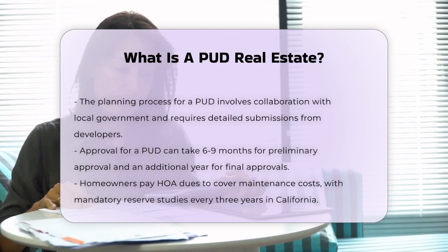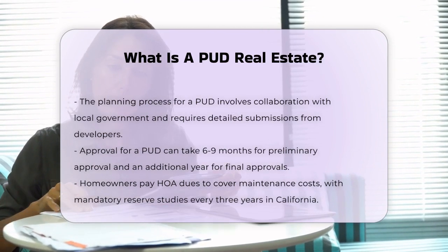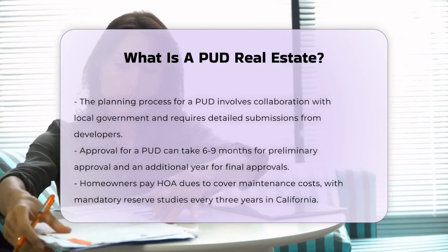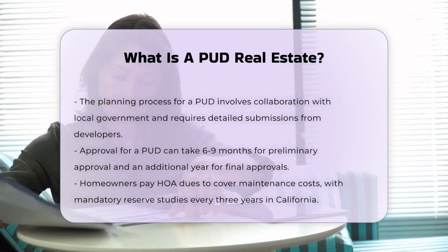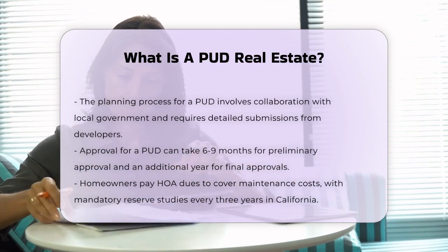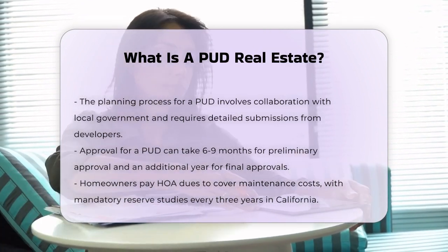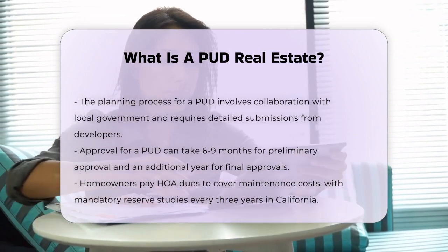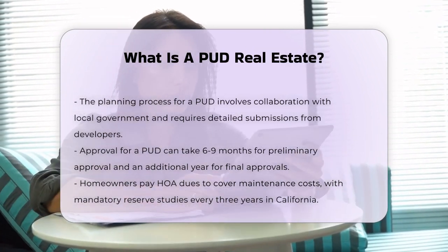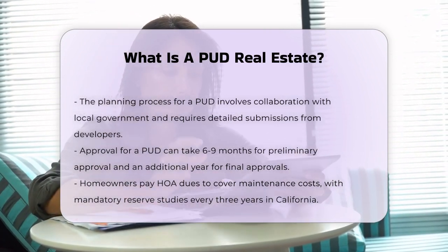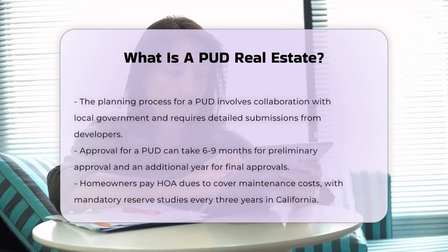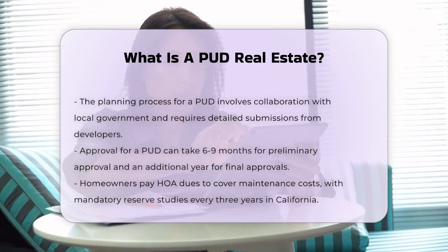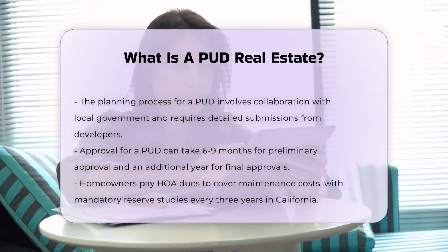Financial and maintenance aspects. Homeowners in a PUD pay dues to the HOA, which cover the costs of common amenities and maintenance. In California, for example, HOAs and PUDs are required to complete a reserve study every three years to ensure adequate funding for maintenance and repairs.